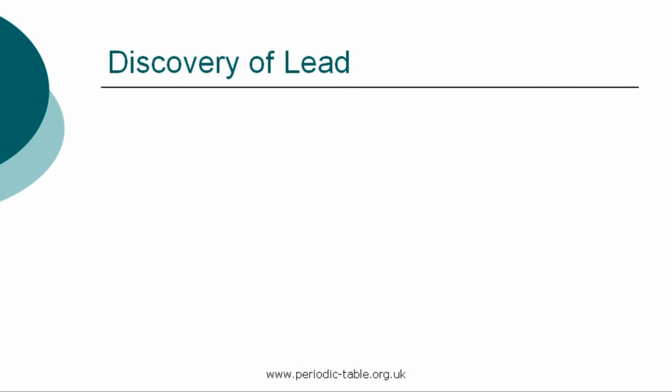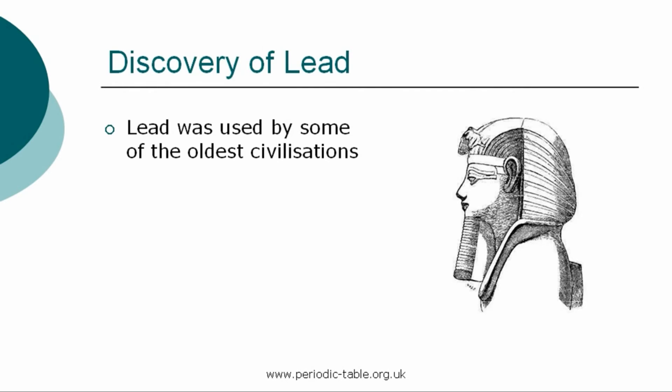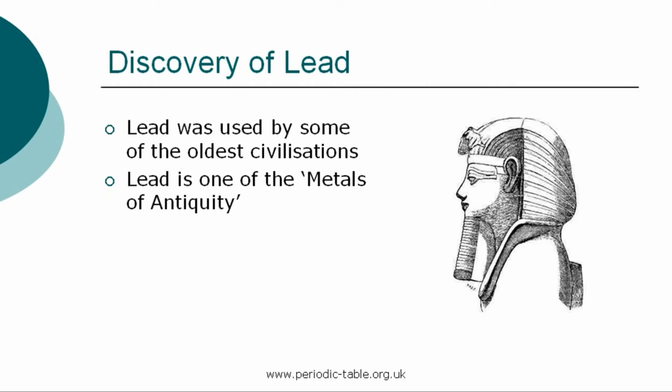Some metals, including lead, were used by some of the oldest civilizations, including the ancient Greeks and Romans. Up to the Middle Ages, people believed that only seven metals existed: iron, gold, silver, copper, lead, tin, and mercury, which are now referred to as the metals of antiquity.